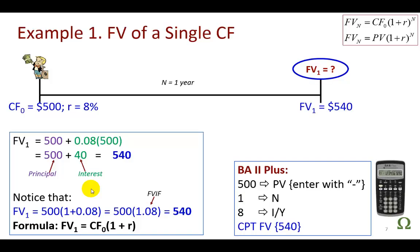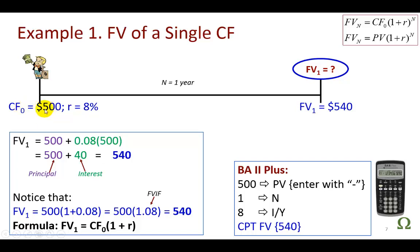Our first set of examples show future value calculations of a single cash flow as illustrated here. In this example, you have $500 to invest and you wish to invest it for one year at 8%. It's going to come out to be $540 at the end of one year. So how did we get this future value of $540? First off, keep in mind that you're going to get your principal back, which is this $500 — today's cash flow at time zero, which is also the present value.